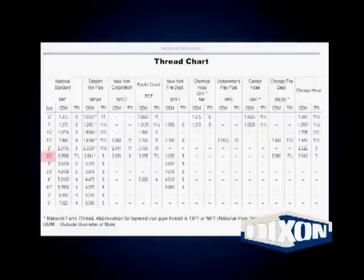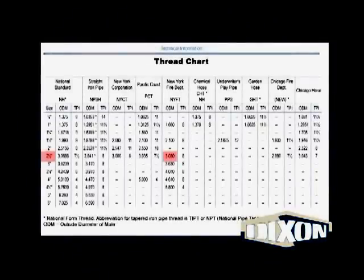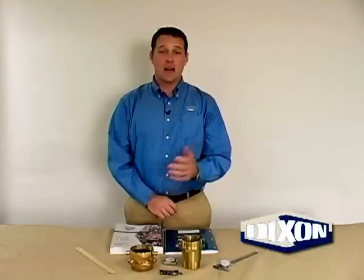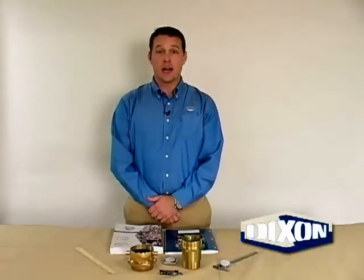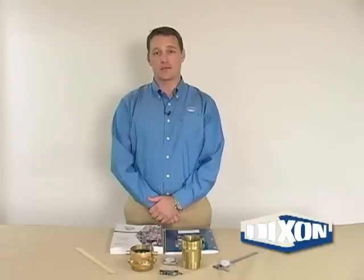Now that you have your data, refer back to the thread dimension chart shown here. We know the ODM is 3.03 and the TPI is 8. Judging by the information here, we are looking at a 2.5 inch New York Fire Department thread. If you have any doubts or any questions at all, please feel free to contact Dixon directly or visit our website. We look forward to helping you make the right connection.